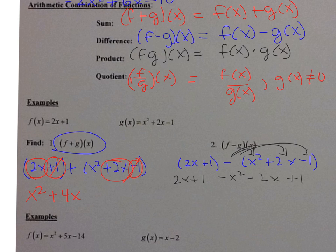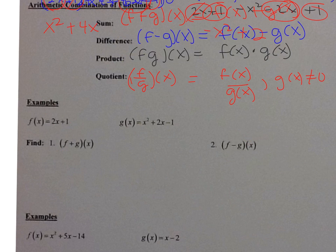And then when you combine like terms, we get negative x squared. Negative 2x minus 2x, that cancels. 1 plus 1 is 2. So it's negative x squared plus 2. Okay, let's look at the multiplying divide.